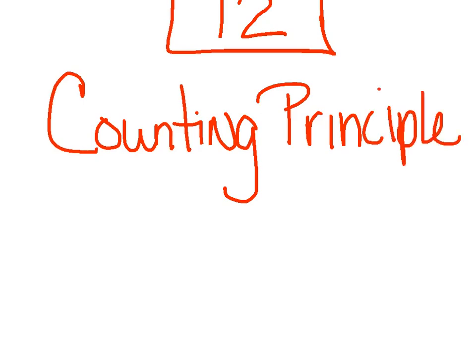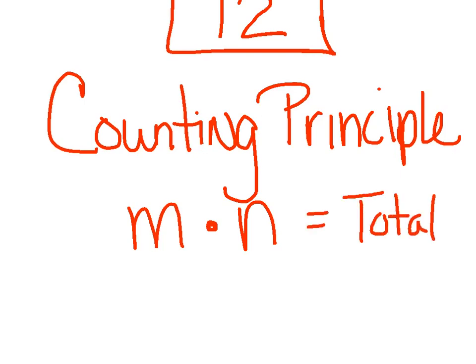Now, this actually has a name. This is called the counting principle. And what the counting principle says, if you have m ways to do something and n ways to do another thing, to find your total, you just take your m and you multiply it by your n. Now, you certainly could have 10 different events. And again, you're just going to multiply all of them together. So let's go ahead and take a look at another example.